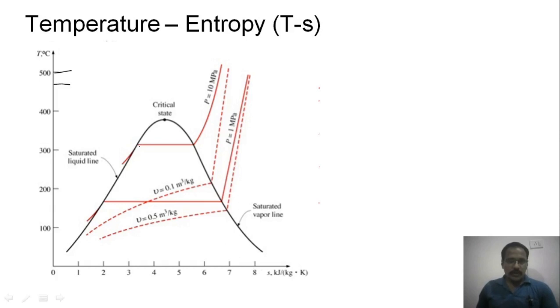The pressure lines are like this — this is the pressure line for 10 megapascal. Inside the dome, the constant pressure line is a horizontal line.